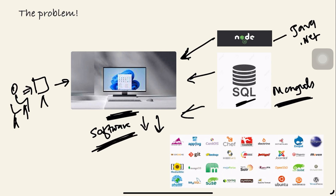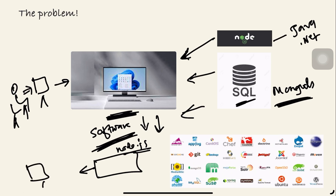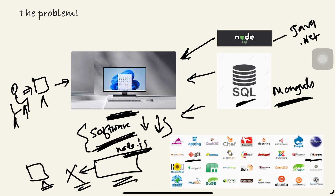To resolve this problem: what if we had everything installed somewhere else, and we just pull that application and use it in our PC? As soon as we finish building the application, we just delete it. We save memory, installation time — everything becomes efficient. Whatever software we require — Git, Maven, anything — we can get it. That is the problem Docker came in to solve.